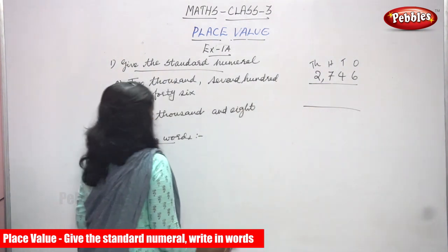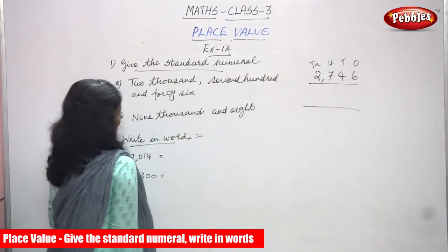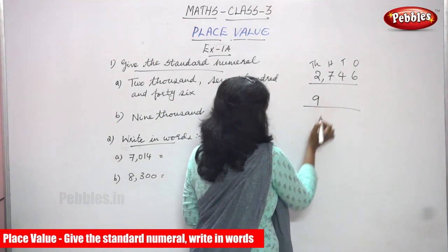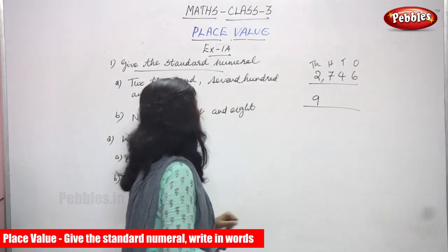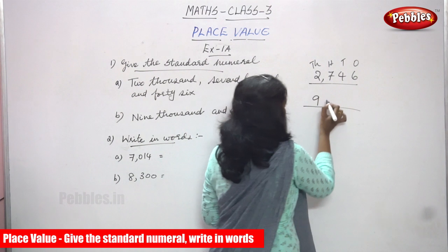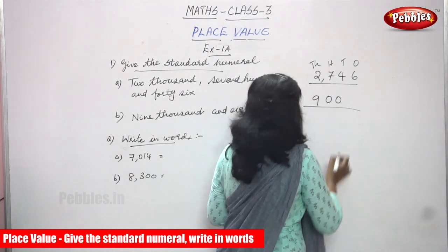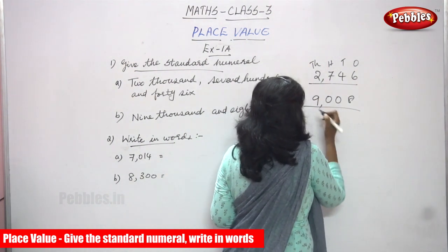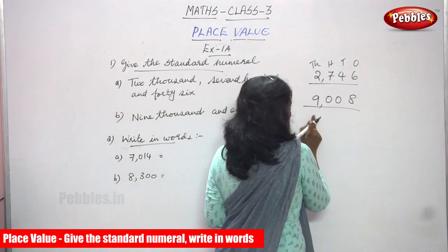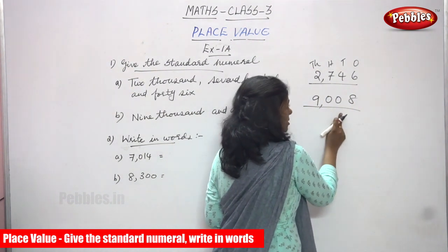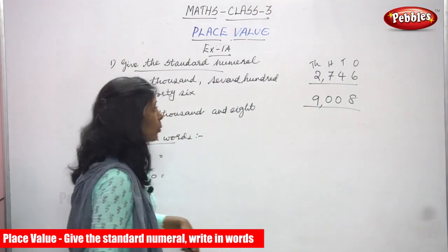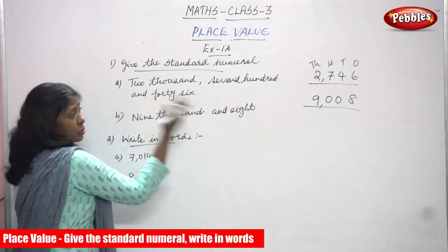Now 9008. So 9000 — first you have to write 9 in the thousands place. After that, 8. There are no numbers for hundreds and tens, so you put 0 and 0. Then the ones place is 8. So 9008: 9 in the thousands place, 0 in the hundreds place, 0 in the tens place, and 8 in the ones place. The answer is 9008.